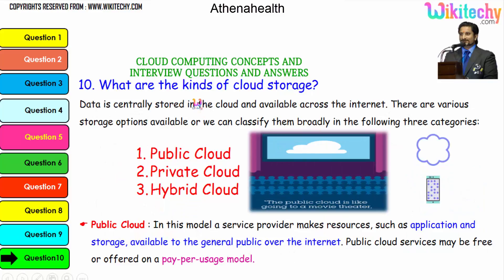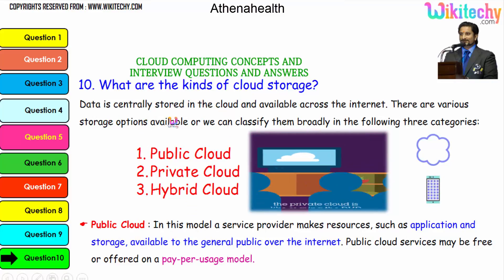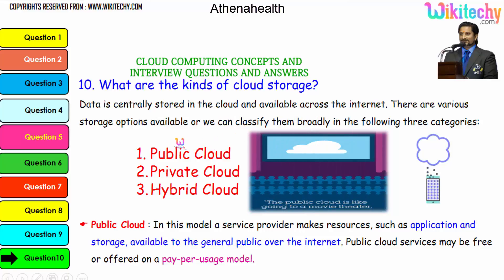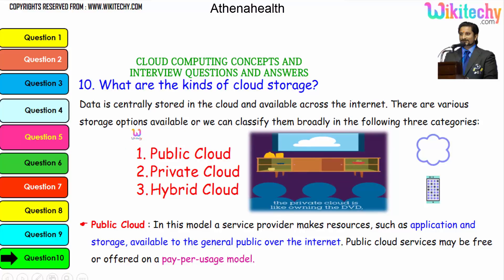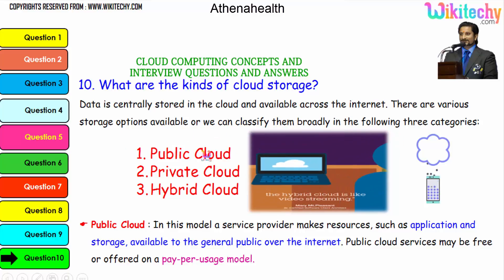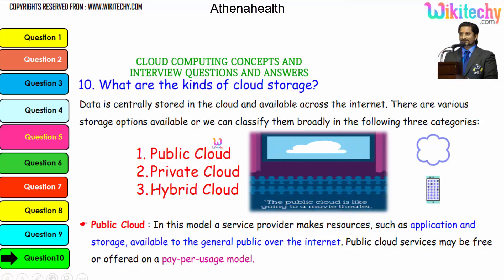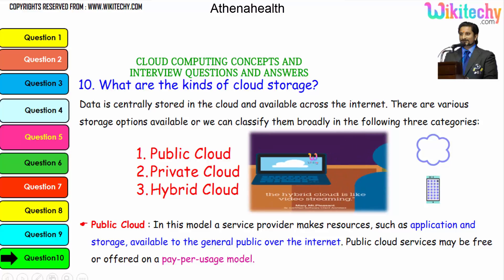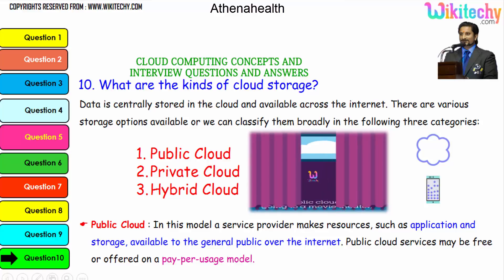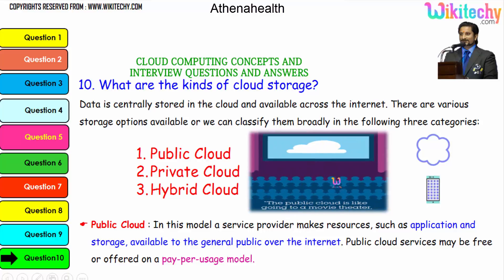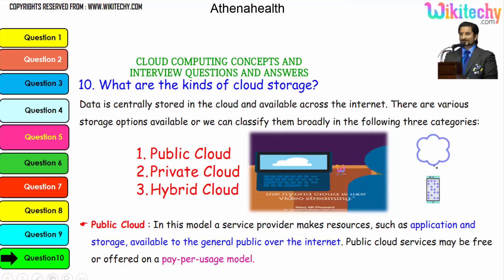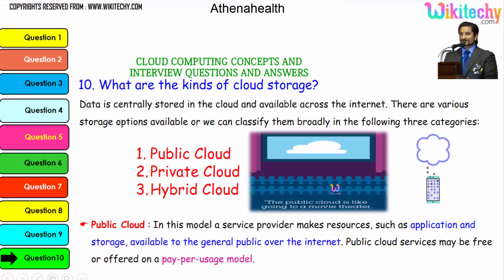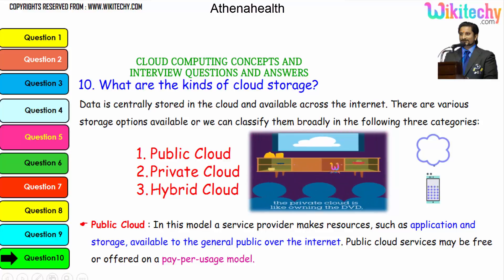Now let's talk about the kinds of cloud storage. Data is centrally stored in the cloud and available across the internet. There are three major storage categories. The public cloud is like going to a movie theater. Private cloud is like owning a DVD at home. Hybrid cloud is like video streaming — a mix of private and public.